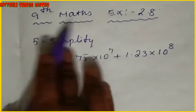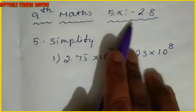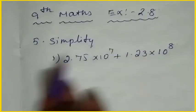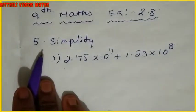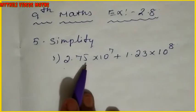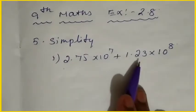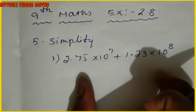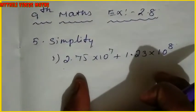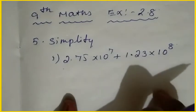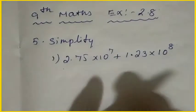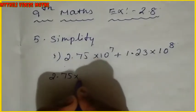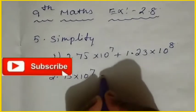Hi students, this is 9th Maths, Exercise 2.8. We have already completed 4 sums; now we are going to see the 5th sum. That is: simplify 2.75 into 10 power 7 plus 1.23 into 10 power 8. This is scientific notation, so we have to change it into decimal places and then add.